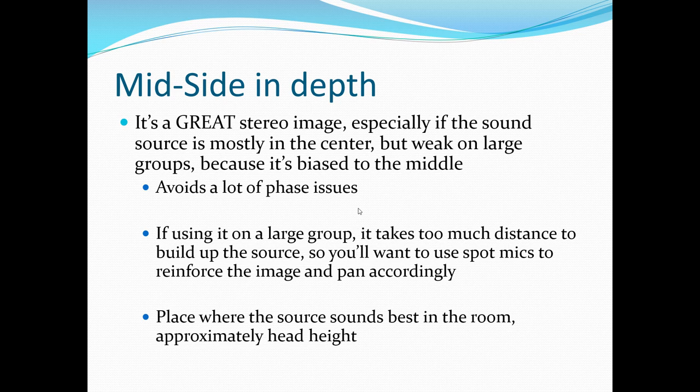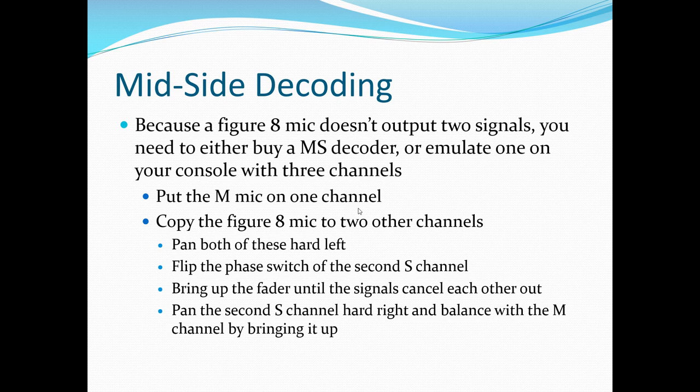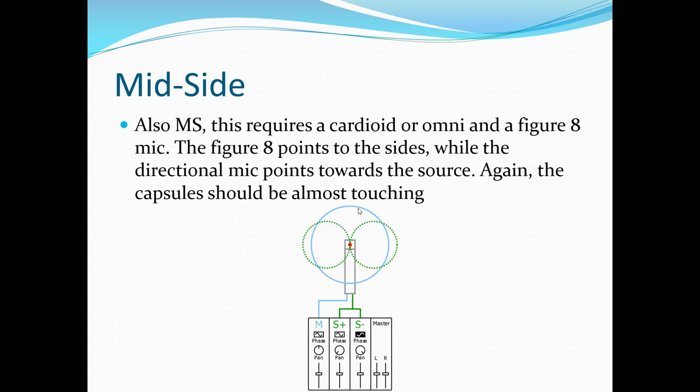Place the mid-side configuration where the source sounds best in the room — it should be approximately head height, or a little lower toward the instruments. With mid-side, you have to decode the signal. A figure-eight mic does not output two signals, so you need to either buy a mid-side decoder or emulate one in your DAW. Put the center mic on one channel, copy the figure-eight mic to two other channels, pan one hard left, flip the phase switch of the second channel, bring up the fader until the signals perfectly cancel each other out, then pan the second side channel hard right, and balance with the mids by bringing the mids up. This takes a little practice, and it's one we're not going to use a whole lot.